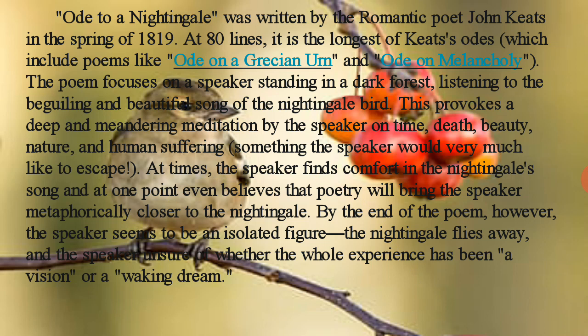'Ode to a Nightingale' was written by the romantic poet John Keats in the spring of 1819. Romantic means in literature it is imaginary — those who imagine about nature, beauty, and love, expressing through emotions and feelings. That's why he is called a romantic poet. The poem contains 80 lines; it is the longest of Keats' odes, which include poems like 'Ode on a Grecian Urn' and 'Ode on Melancholy.'